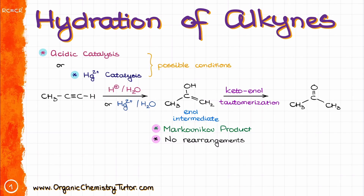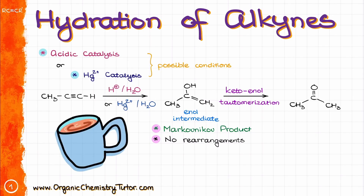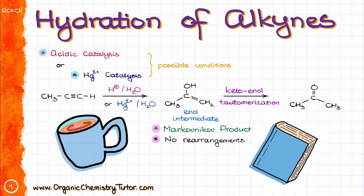Both reactions, regardless of conditions, lead to the formation of the enol intermediate, which then undergoes keto-enol tautomerization and forms the final product — a ketone. Both reactions have a very interesting mechanism, so without any further ado, grab your cup of coffee and notebook to work through the examples with me, hit that like button for good luck on the test, and let's get started!